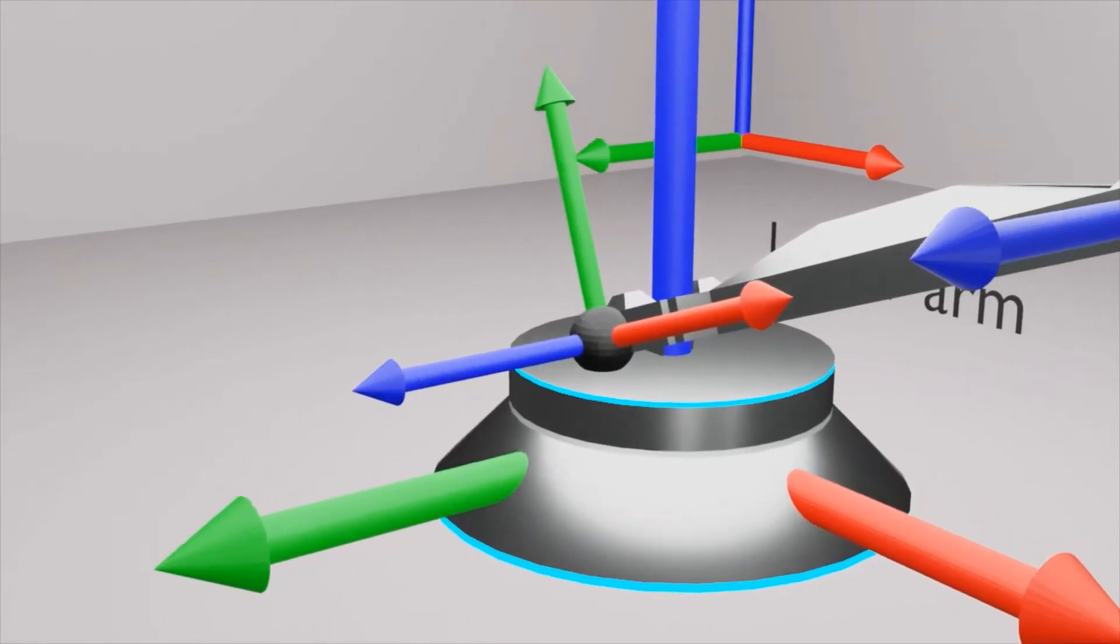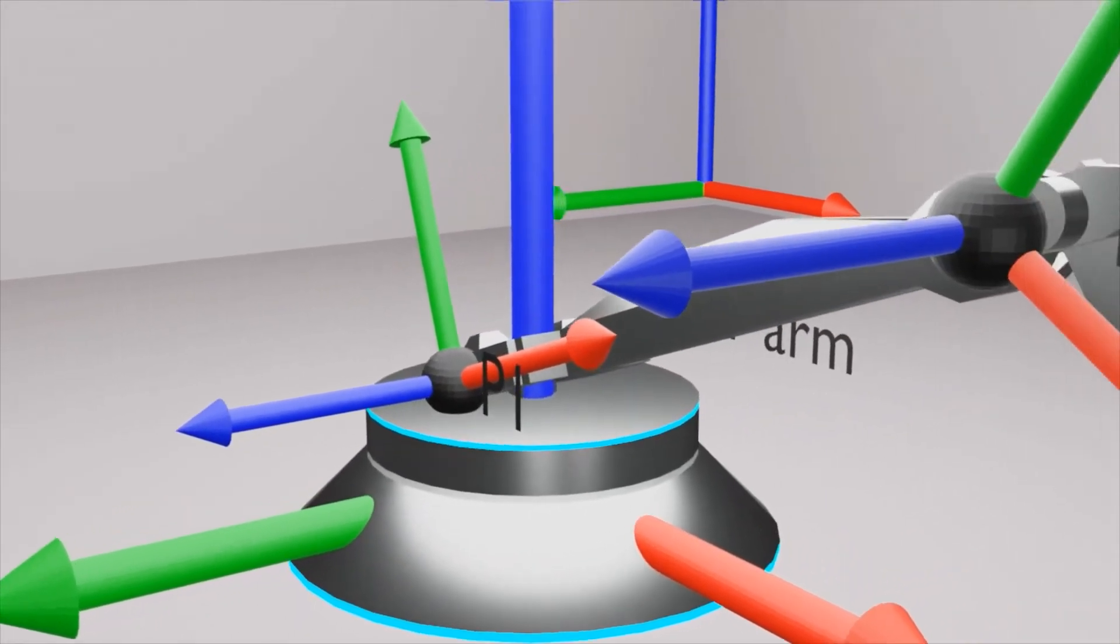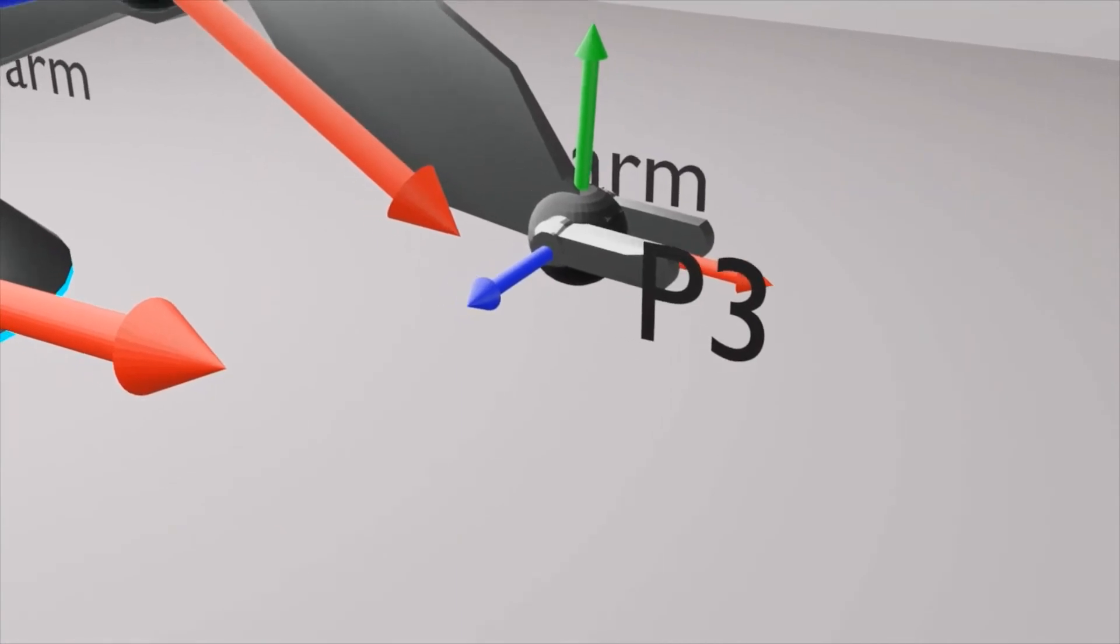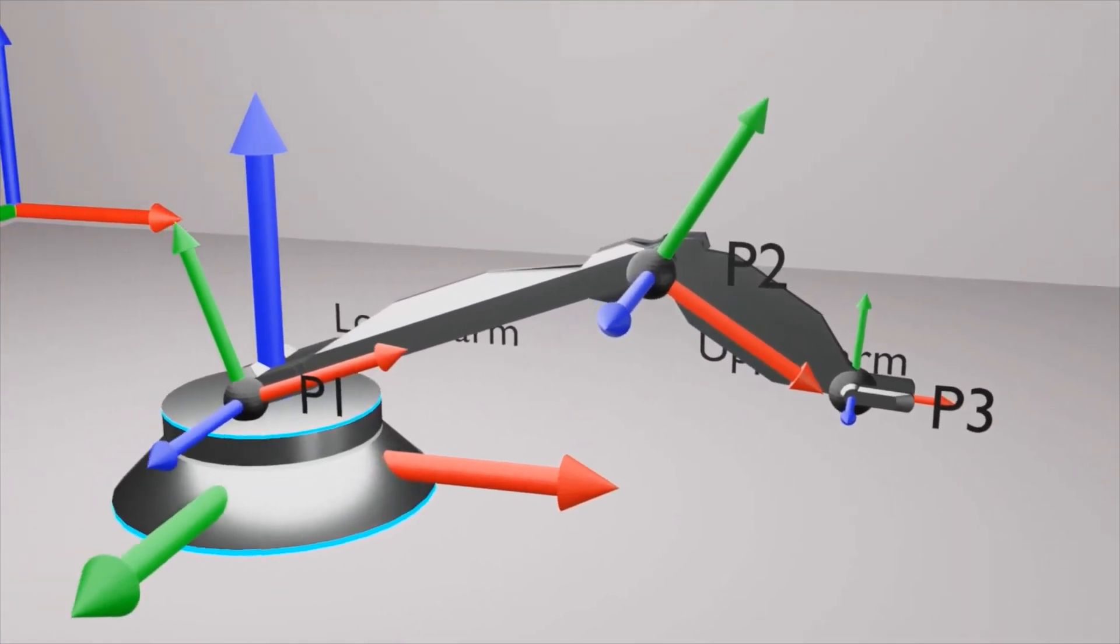For example, let us take points p1, p2, and p3. Points p1 and p2 are associated with body coordinate systems whereas p3 is associated with the tool coordinate system.